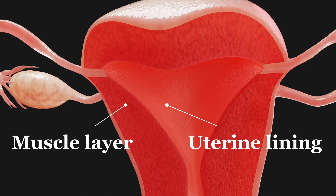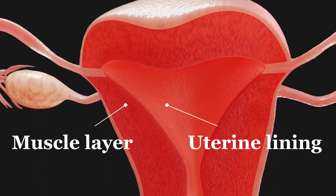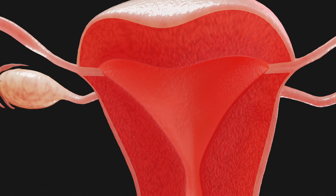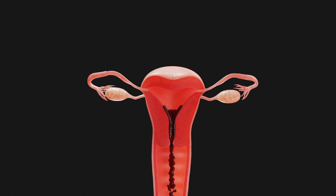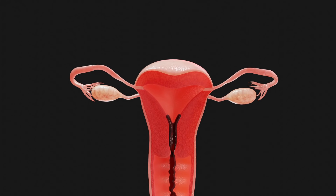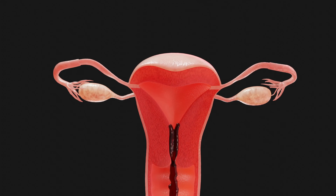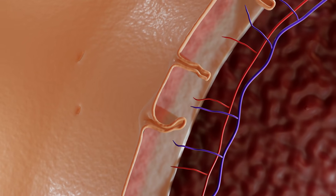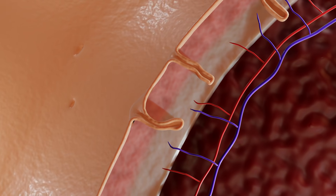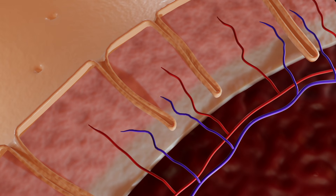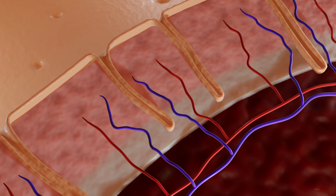Menstruation marks the start of a new cycle. The period lasts a few days and is the result of the shedding and flushing out of part of the old uterine lining. In the days that follow, this layer is rebuilt, stimulated by estrogen. Blood vessels sprout and supply the tissue with oxygen and nutrients.